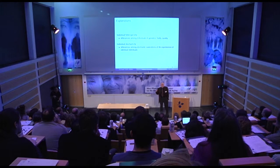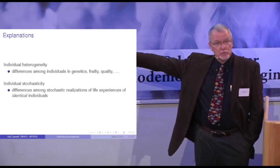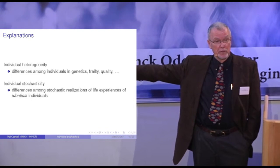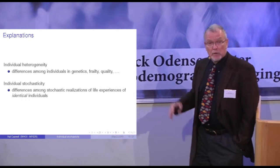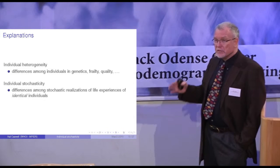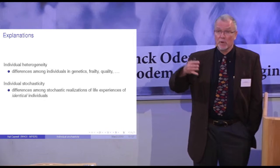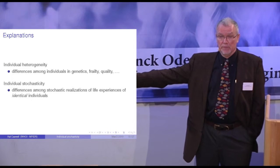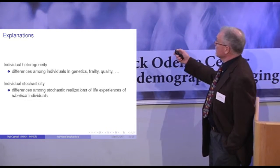There are two different reasons why that might happen. One is heterogeneity — there could be differences between those kittiwakes. The ones that produce 20 offspring could be better in some way than the ones that produced zero or one, and that's probably partly true. But the other part is what I call individual stochasticity: differences among those individuals in the stochastic realization of what happens to them over the course of their life, even if they're identical. I call this individual stochasticity.